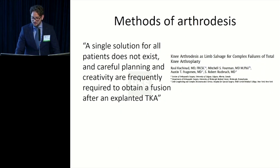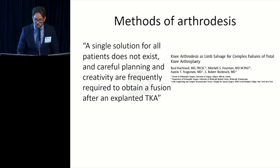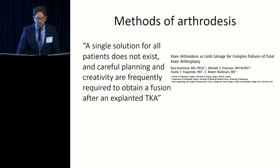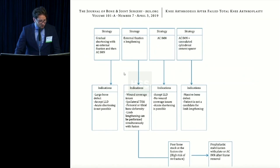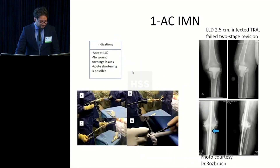Regarding methods of arthrodesis, as Dr. Rosberg noted, a single solution for all problems does not exist — you have to be careful and creative when achieving knee fusion. In our JBJS article, we describe four strategies, each with specific indications. All cases in this presentation are patients from HSS, either from Dr. Rosberg or Dr. Fragman.